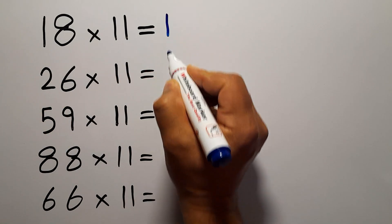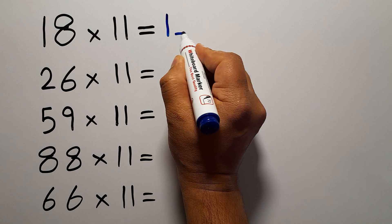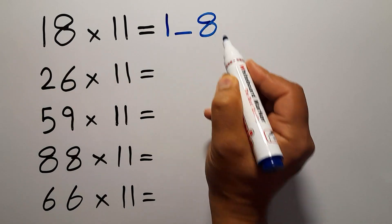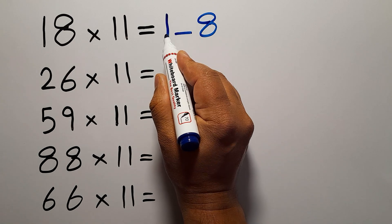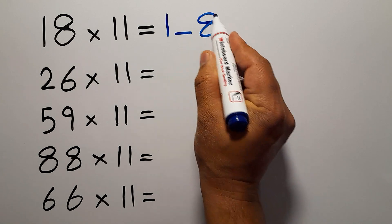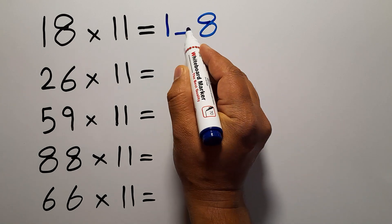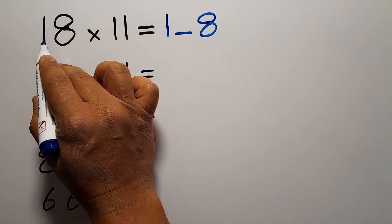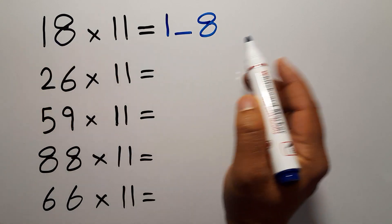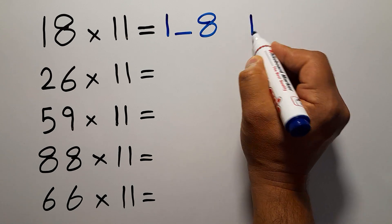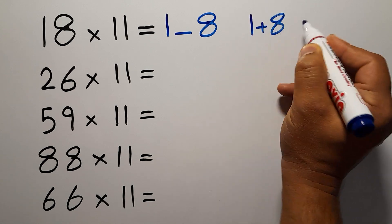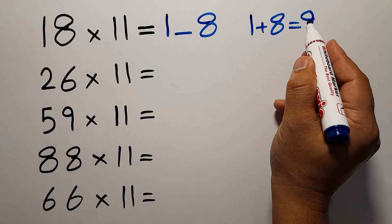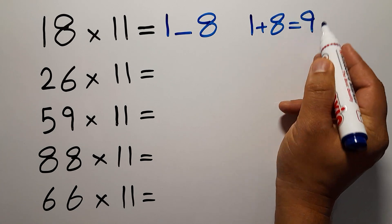Then leave a blank space and then write 8 here, so we have 1, a blank space, and 8. To fill the blank space, add 1 and 8 together. So 1 plus 8 gives us 9.